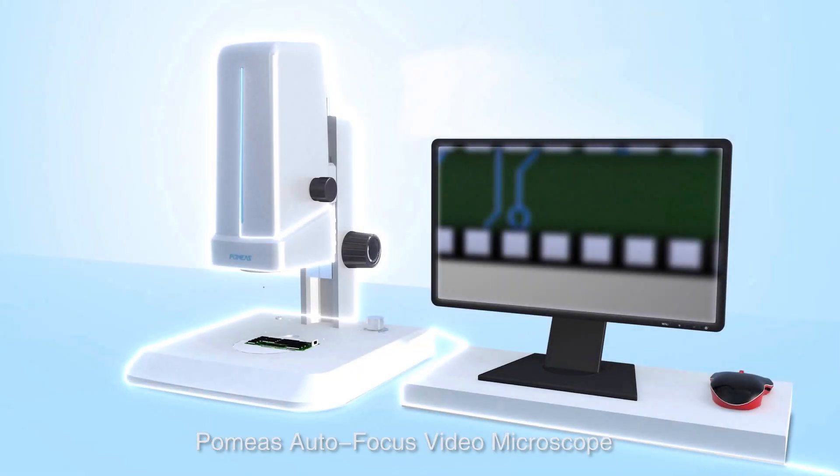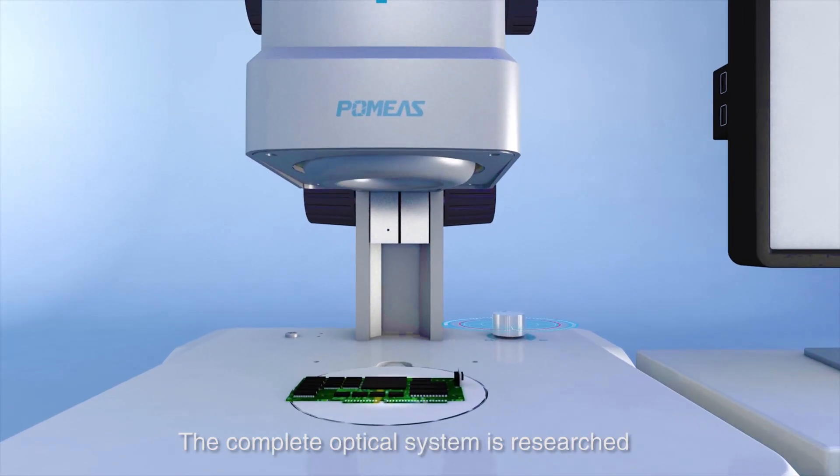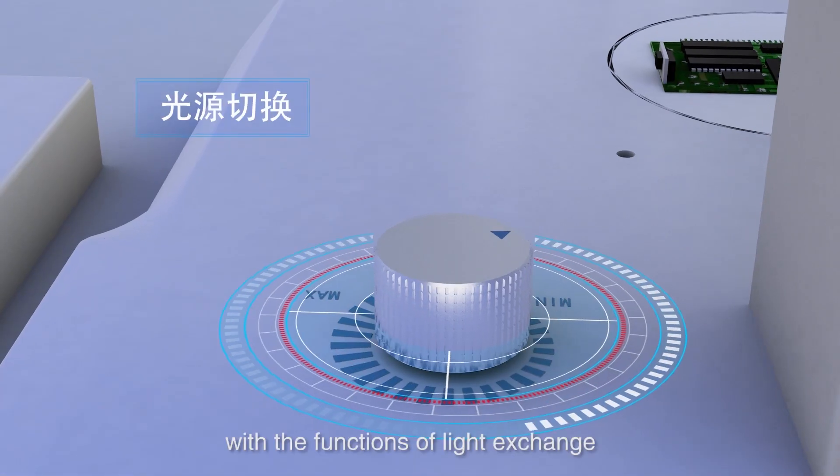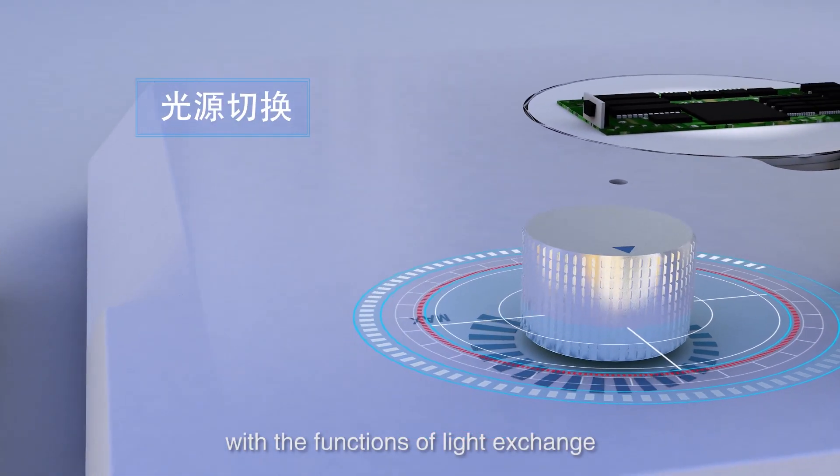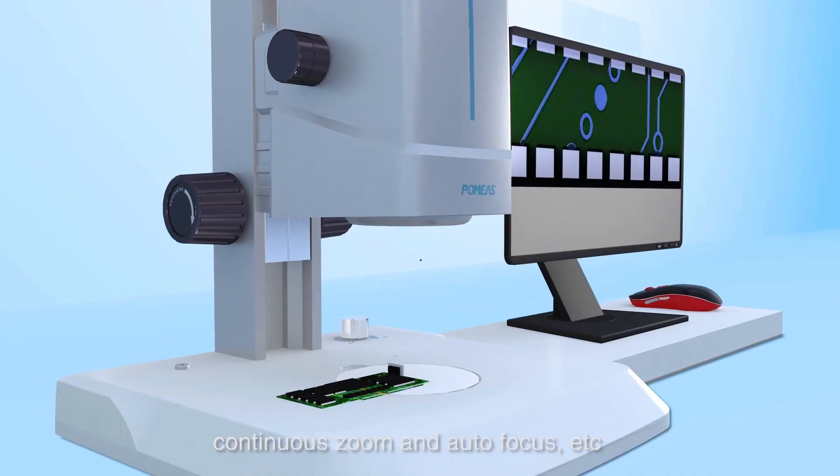Pomius Autofocus Video Microscope is designed with all-in-one structure. The complete optical system is researched and developed by Pomius independently, with the functions of light exchange, continuous zoom, and autofocus.